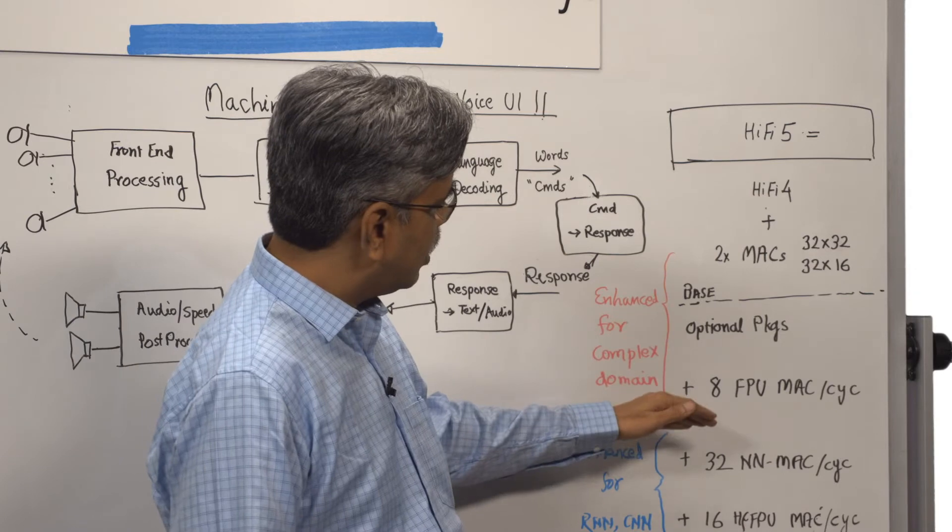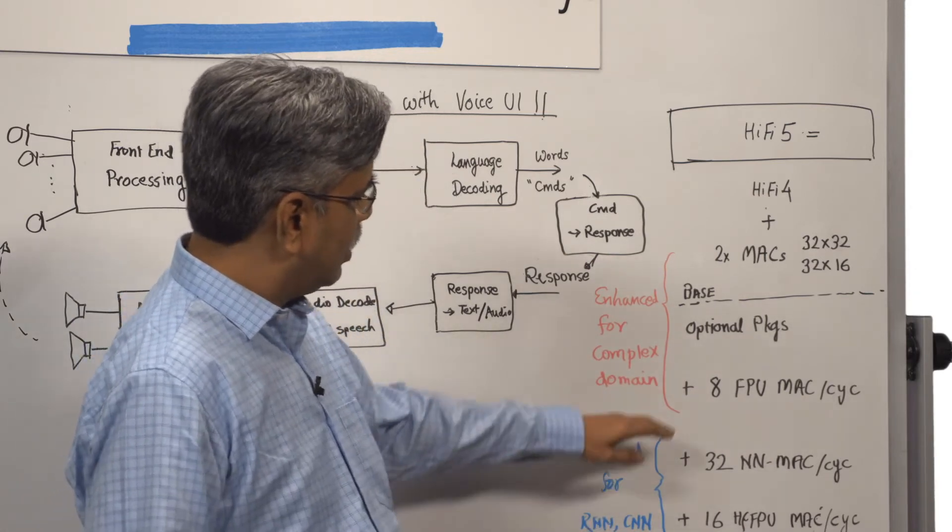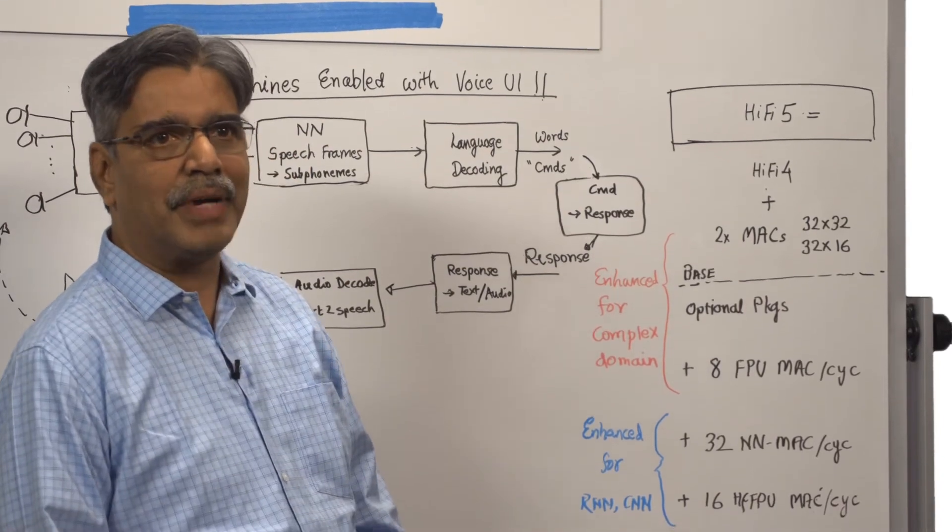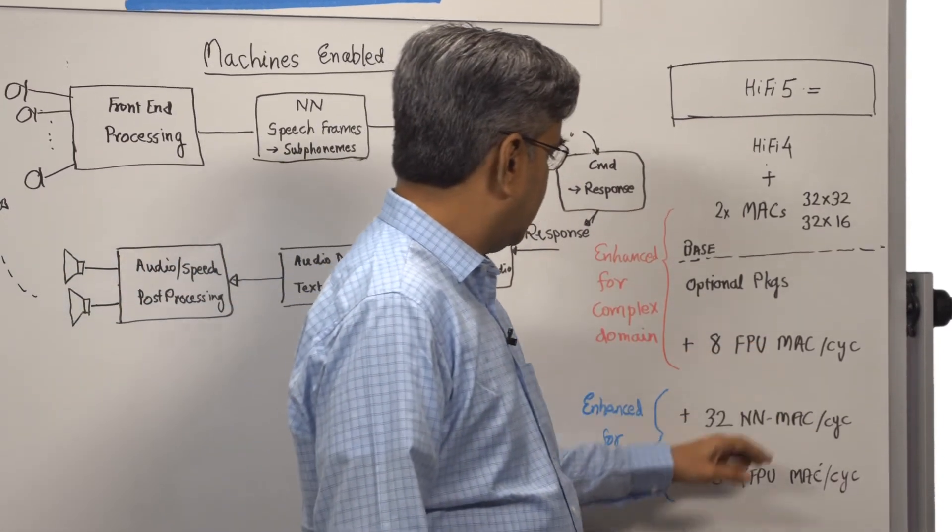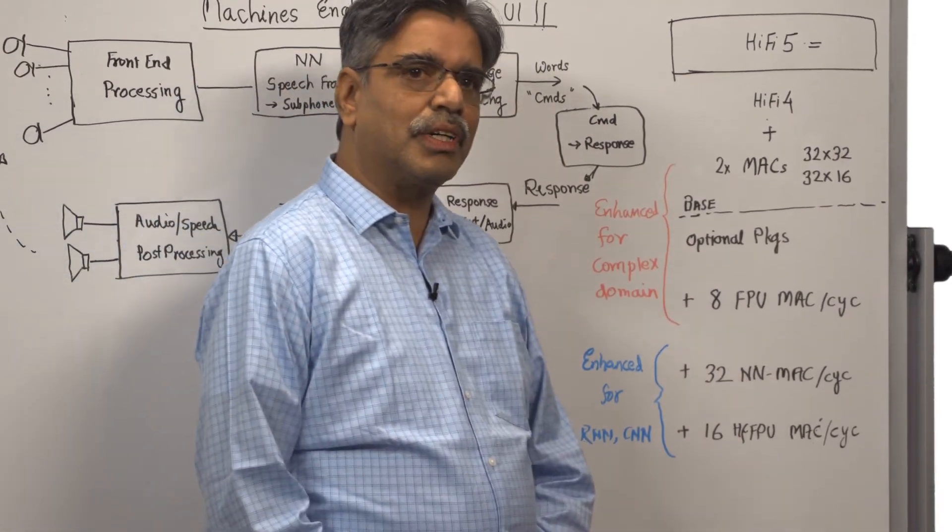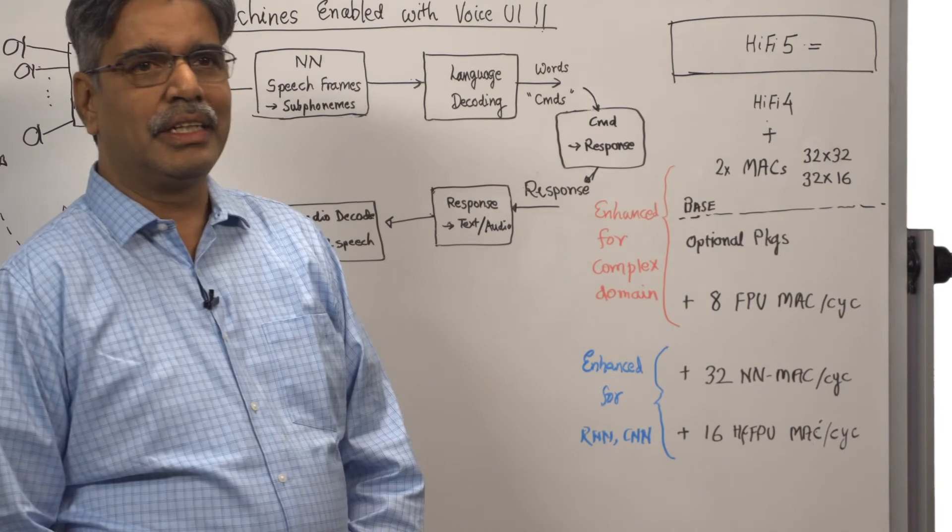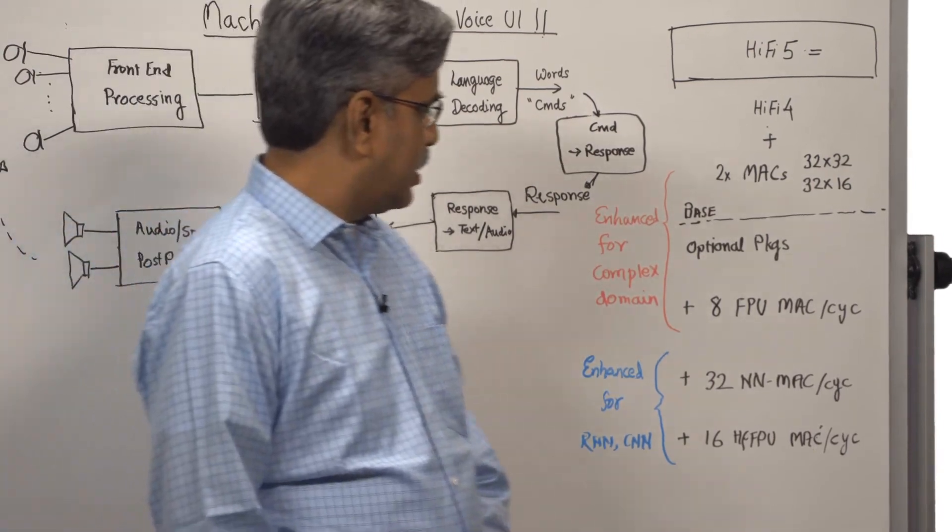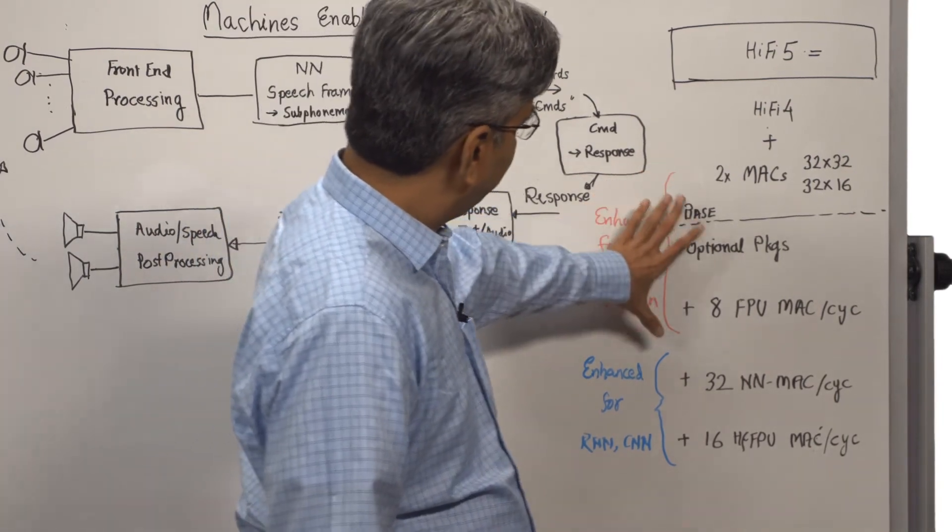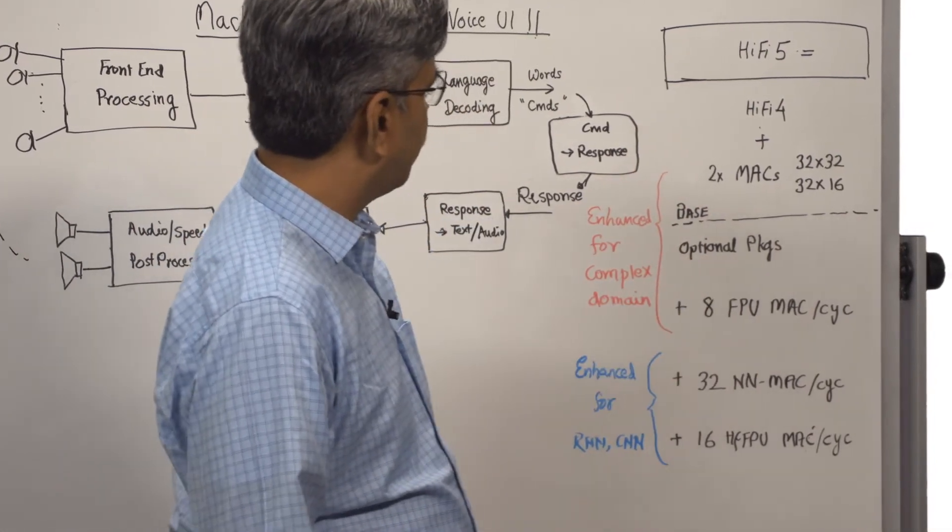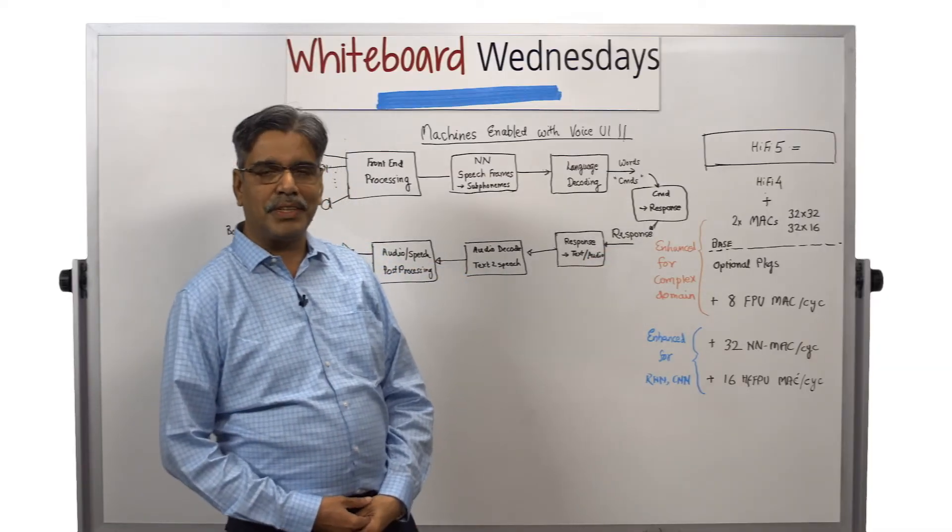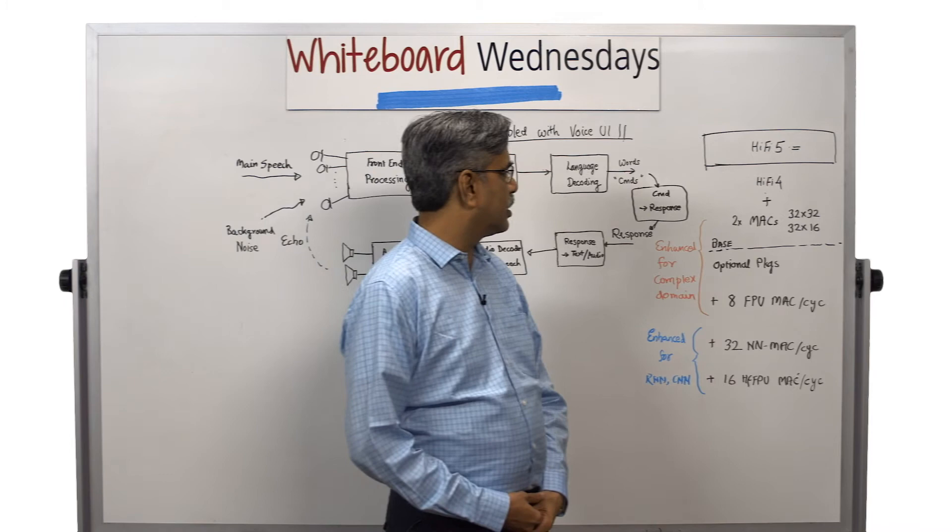There are three optional packages. One, a floating-point unit which can do eight floating points per MAC per cycle. And other optional units are 32 neural network MACs per cycle and 16 half-precision floating points per cycle. The base plus optional floating-point unit are enhanced for complex domain, FFT domain pre-processing algorithms.